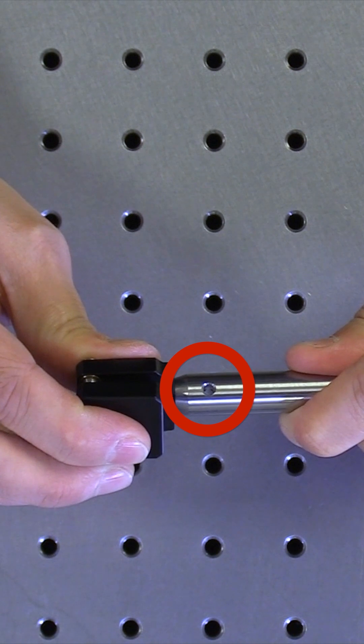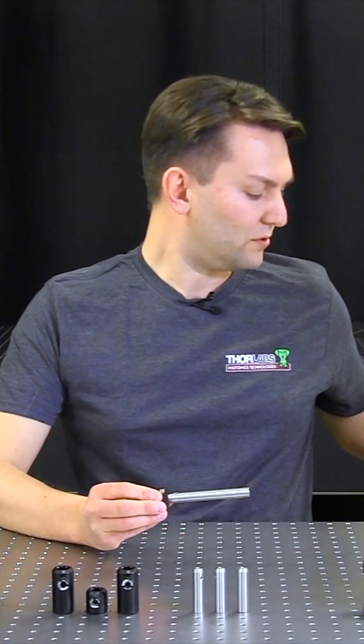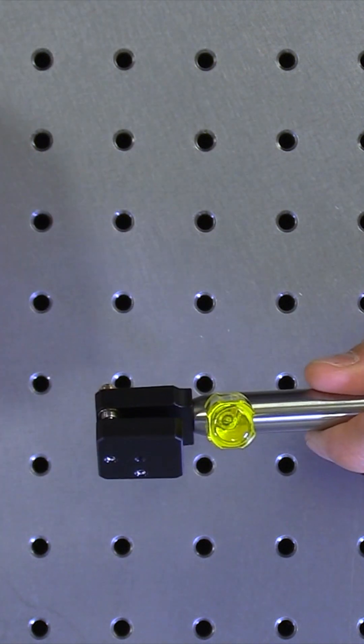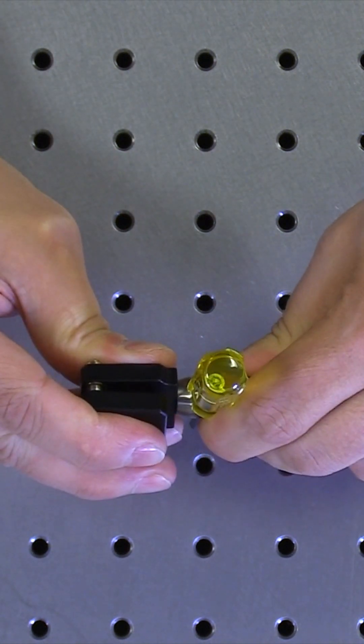There is a through hole in the middle of the post. The purpose of this through hole is to put a ball driver through that hole and provide a little bit more torque to snug up that connection.